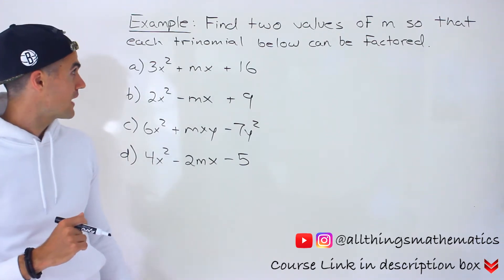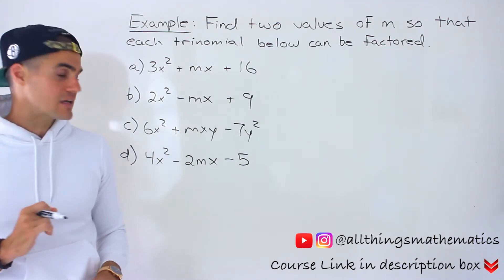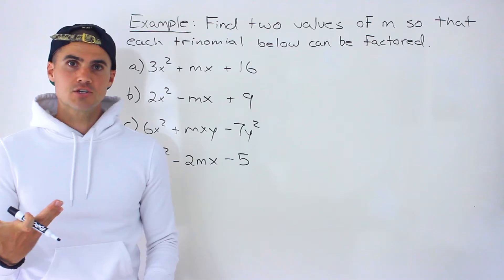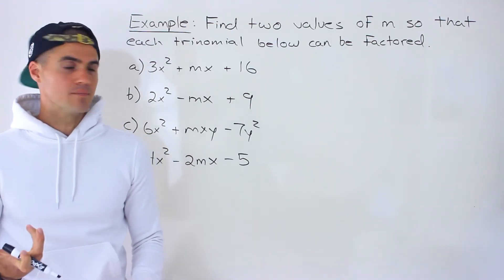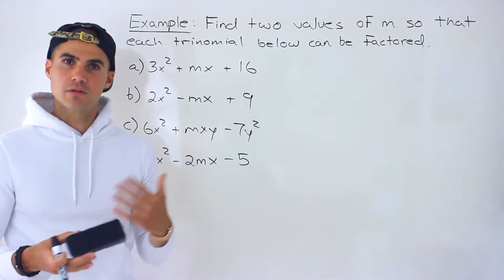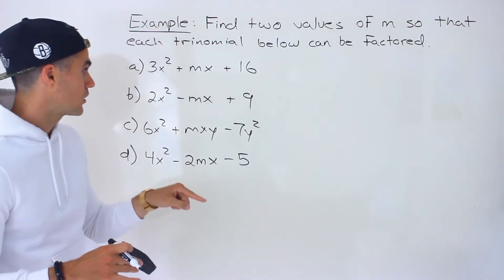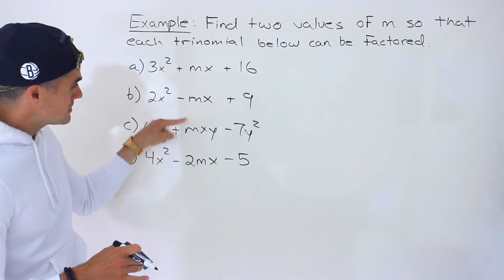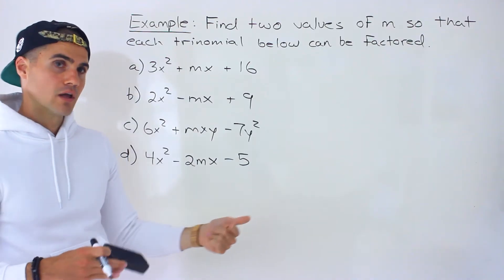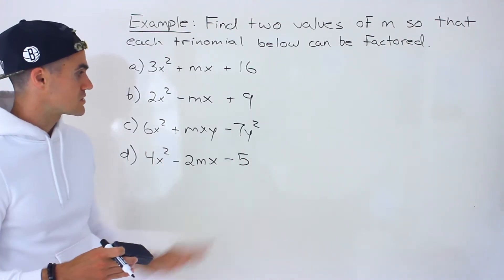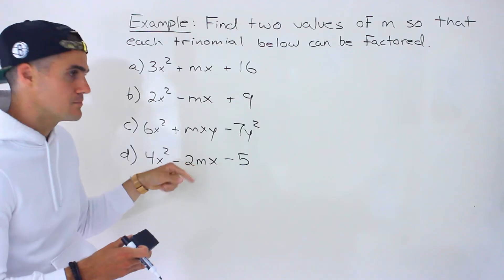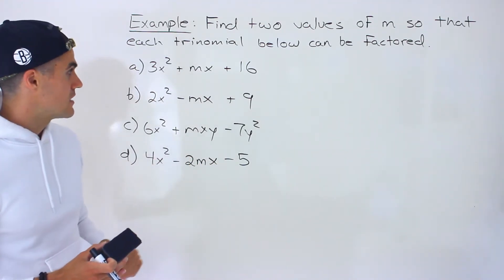We have to find two values of m so that each of these trinomials can be factored. We did questions like this in the previous section, but there we were dealing with a case where the a value was 1. Notice that with these trinomials the a value is not going to be 1, but the same process is going to apply. In this video we're solving for m, and notice that m is going to be in the b values of these trinomials.